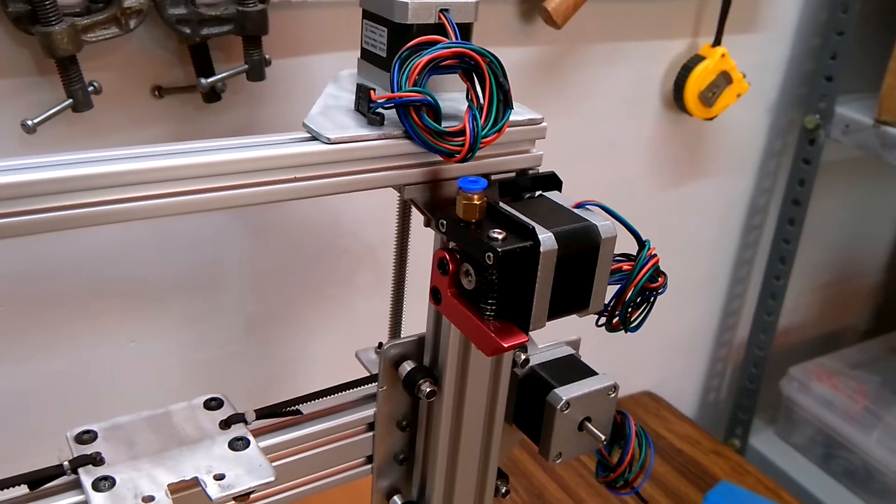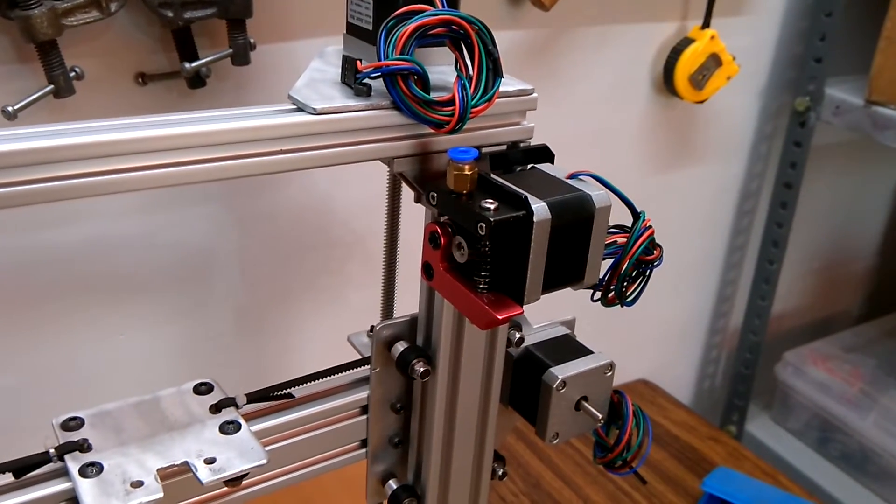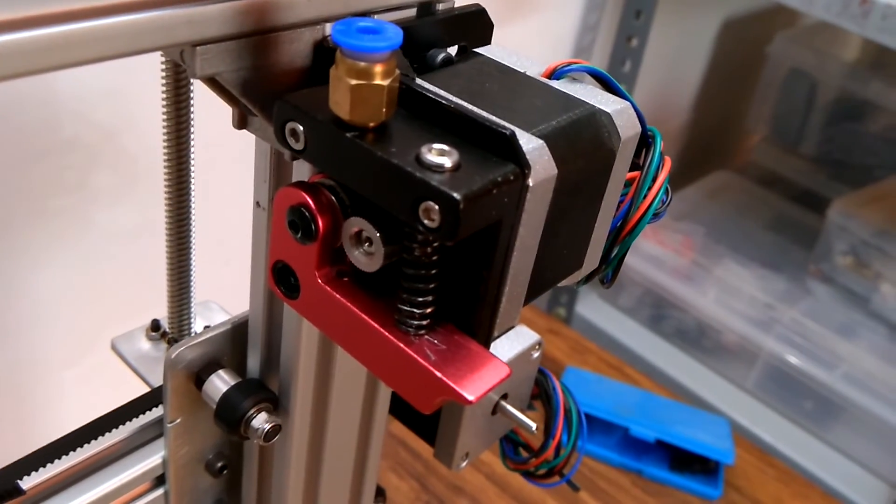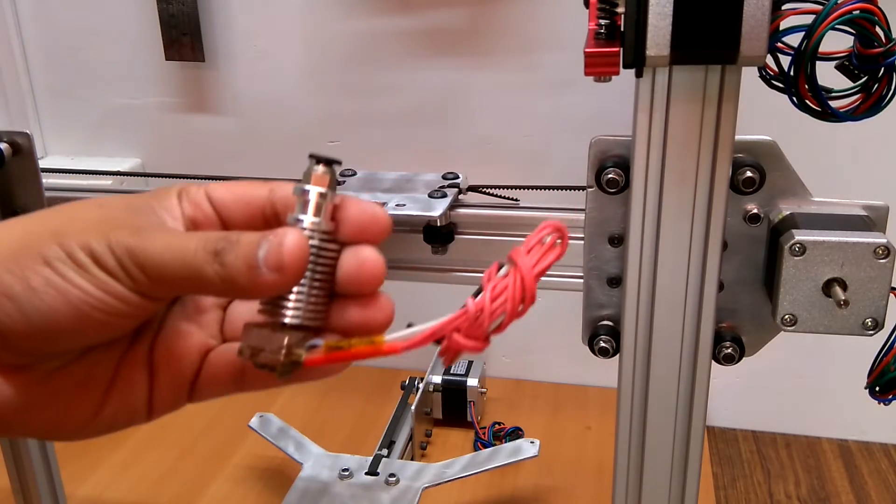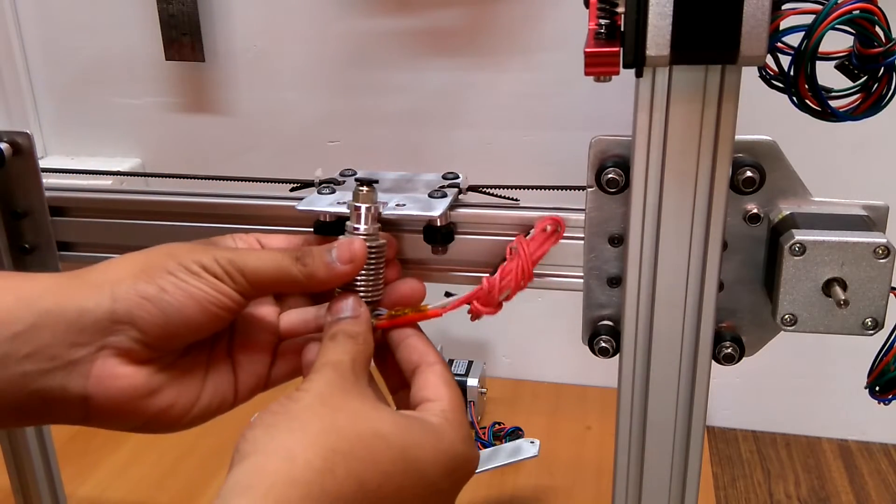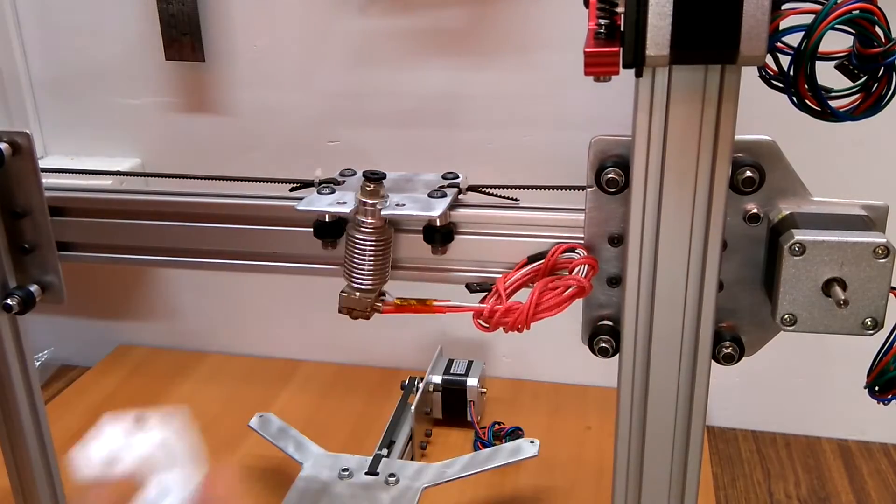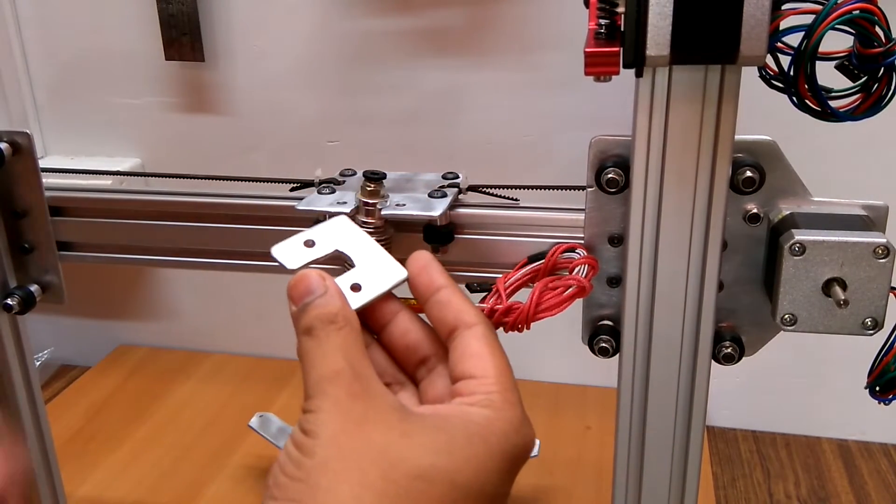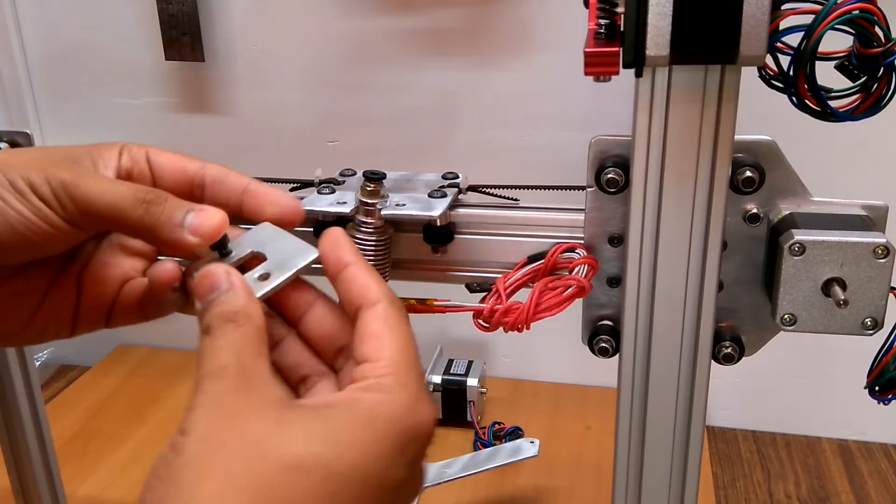I attached an MK8 bowden extruder which I have shown in another video. I then placed the J6 hotend on the x-axis mount plate and secured it using another mount plate and 4 mm nut bolts.